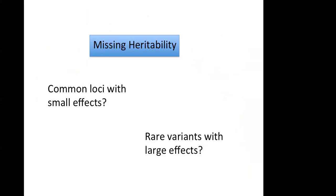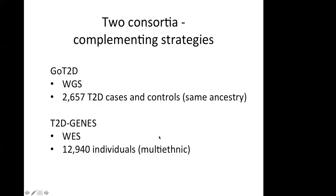As already mentioned, the heritability directly explained by these GWAS loci is less than 10%. The question is whether there are simply more loci with small effects contributing to this missing heritability, or whether we will find rare variants with larger effects. To answer the question about rare variants, the following paper set out to do whole genome or whole exome sequencing in two different consortia.